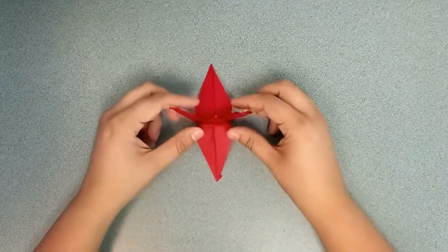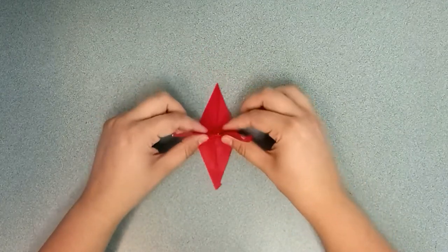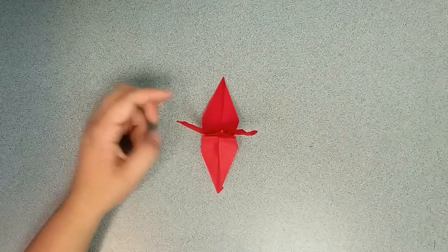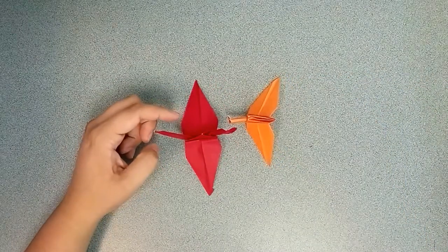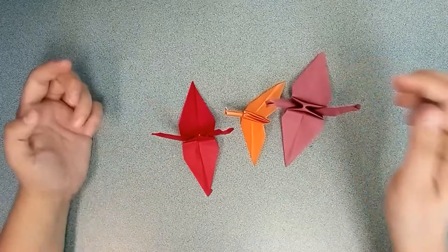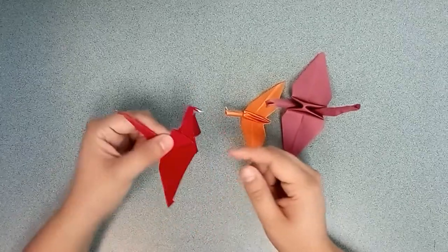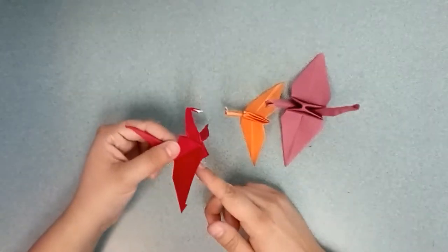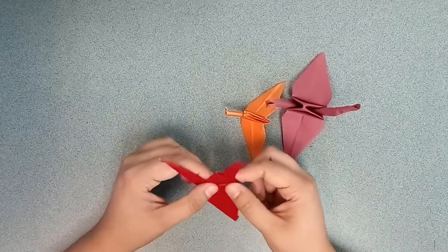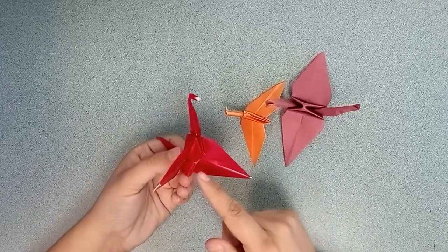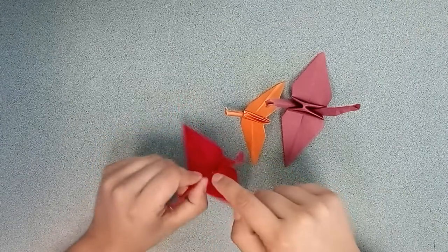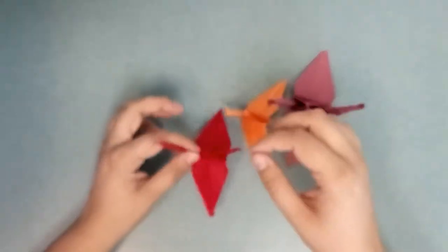And then once you have your paper crane, you can turn it into a mobile. You have your several different cranes, you can make them in different sizes. You just have to make your square of paper bigger. And to make it into a mobile, you just take a needle and a thread or some fishing line or yarn or whatever, and you thread it through the bottom and the top, and you can put beads on it.